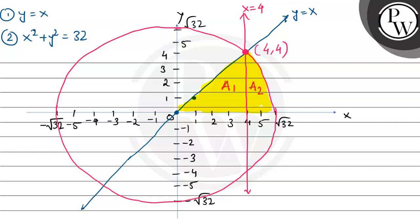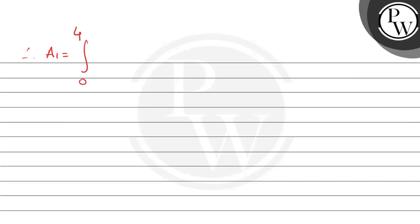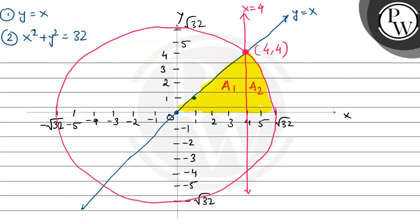A1 is bounded by the line y equals x and the x-axis, that is, A1 is the area under the curve y equals x over the interval x going from 0 to 4. Therefore A1 equals the integral from 0 to 4 of x dx, which is x squared over 2 evaluated from 0 to 4. Applying the limits: 16 divided by 2 equals 8 square units.